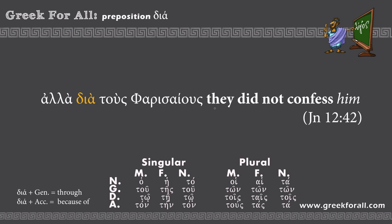First example: 'alla dia tous Pharisaious — they did not confess him.' The word 'alla' means 'but.' Then we have our preposition dia followed by 'tous Pharisaious,' meaning 'the Pharisees.' The ending '-us' matches the accusative case in our paradigm, so dia plus accusative means 'because of.' The full translation: 'But because of the Pharisees, they did not confess him.'